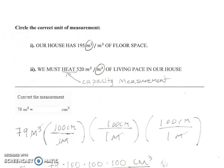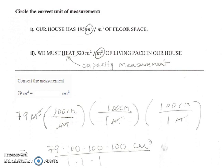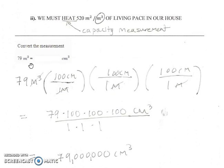Here's an example converting volume measurements. We want to convert 79 meters cubed to centimeters cubed. Just like we converted meters to centimeters, we start with the original measurement and multiply by the conversion factor. In this case we have three conversion factors, because in our original measurement we have three factors of meters with meters cubed.